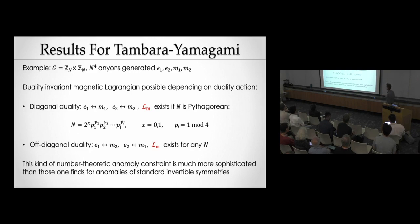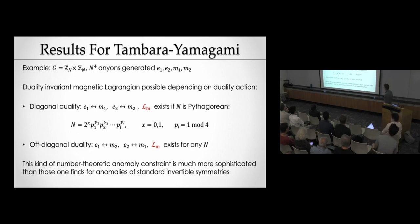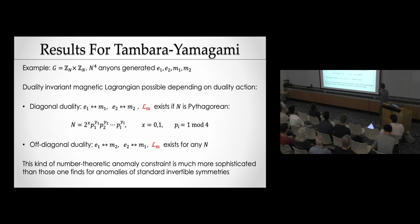For the duality that simply exchanges the two factors, a magnetic Lagrangian exists if and only if N is so-called Pythagorean: N admits a factorization as 2^(0 or 1) times a product of odd primes each of which is 1 mod 4. This is a level of sophistication above what you'd encounter for ordinary anomalies of invertible symmetries — I've never seen an anomaly with such an intricate classification before. By contrast, if you pick a different off-diagonal duality action, L_M exists for any N.